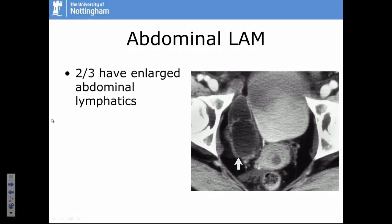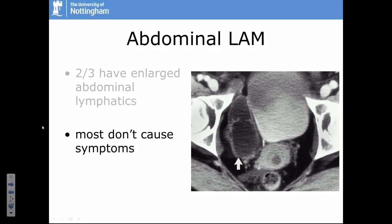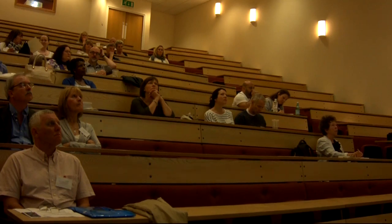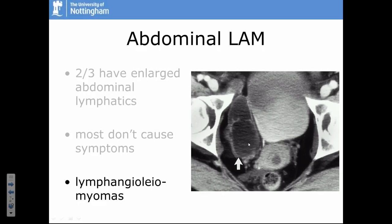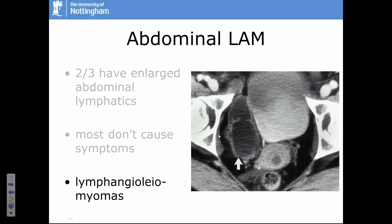LAM doesn't just affect the lungs — there are lymphatics throughout your body. It's particularly the lymphatics in the middle of the chest, middle of the abdomen, and the pelvis that are involved. About two thirds of people, if you look hard enough by CT scan, will have enlarged lymphatics somewhere, usually small and causing no symptoms. Occasionally — maybe about 20% of women — will have larger lymphatic masses. This CT scan at the level of the pelvis shows an enlarged lymphatic pressing on the bladder, sometimes causing urinary symptoms.